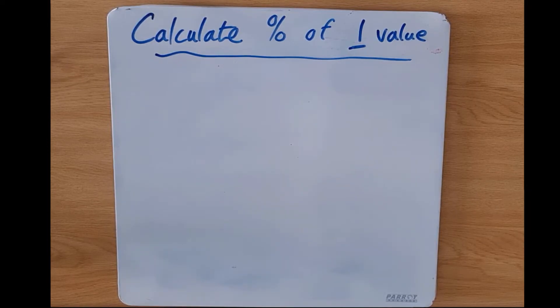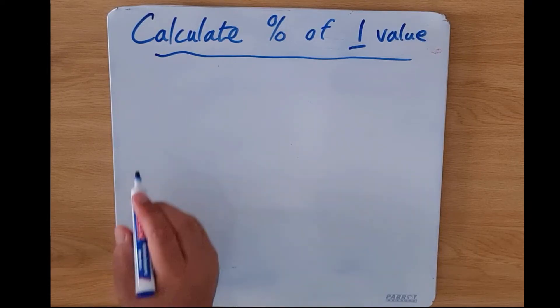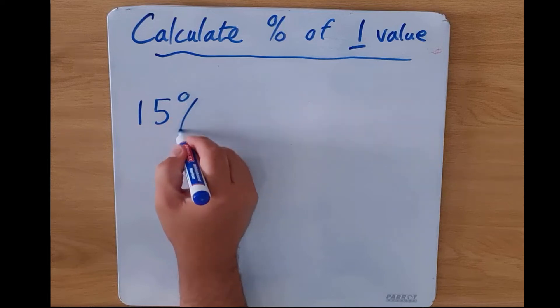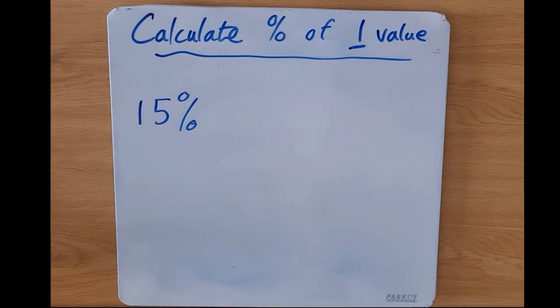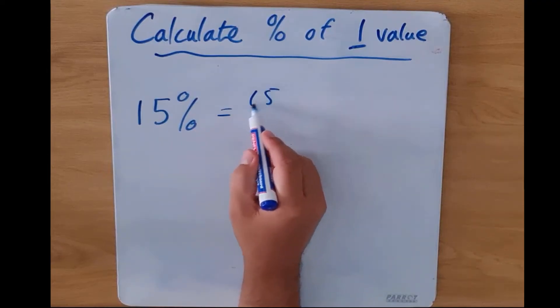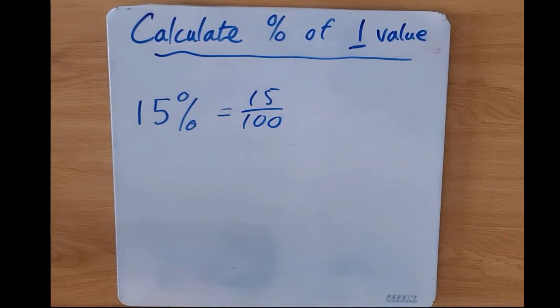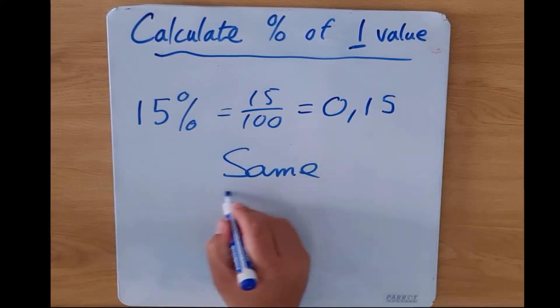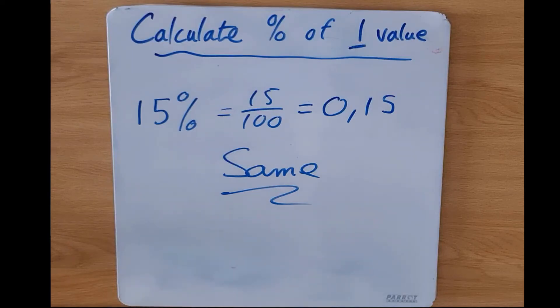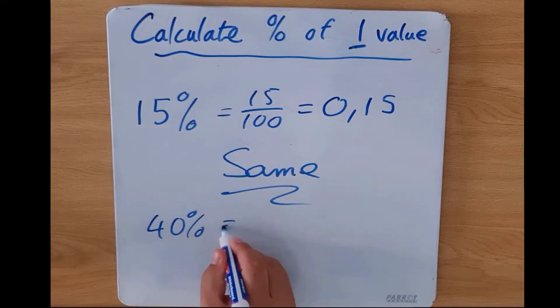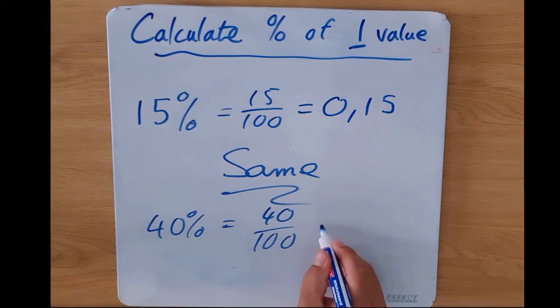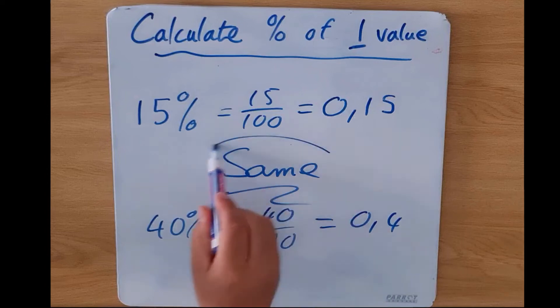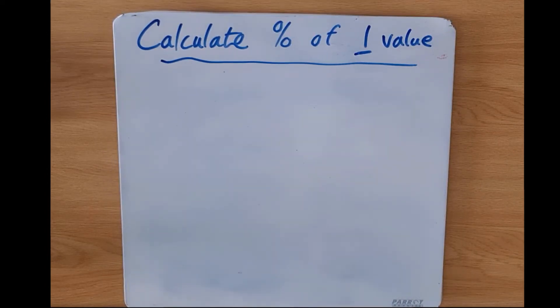Before we go any further, just remember it is important to note that there are different ways that percentages are expressed. For example, I might have 15% over here and that is the same as me saying 15 over 100 and it's the same as me saying 0.15, so they are all the same. But it's still 15%. If I use 40% as another example, that would be 0.4 expressed differently but it's still the same.